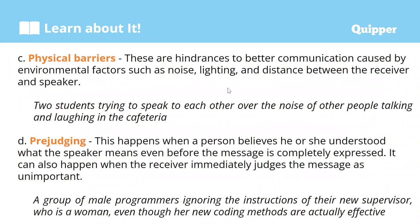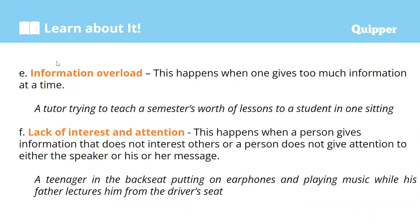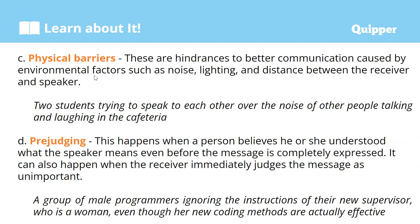Next is physical barriers. Physical barriers are hindrances to better communication caused by environmental factors — factors that are external to us, such as noise, lighting, or the distance between the receiver and the speaker. For example, two students trying to speak to each other over the noise of other people talking and laughing in the cafeteria. Since you are in the cafeteria with many people, noise is expected. Because of the environmental factors present at the time and place of communication, they hugely contribute to physical barriers. Physical barriers always have to do with the environmental factors present during the communication process.